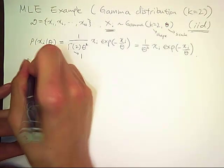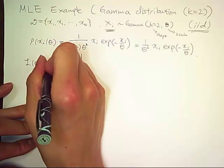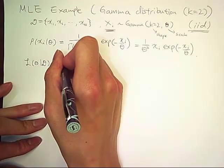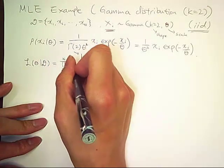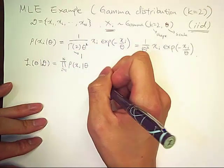Now we can define a likelihood function of theta given data. This is a product of p of x sub i given theta.